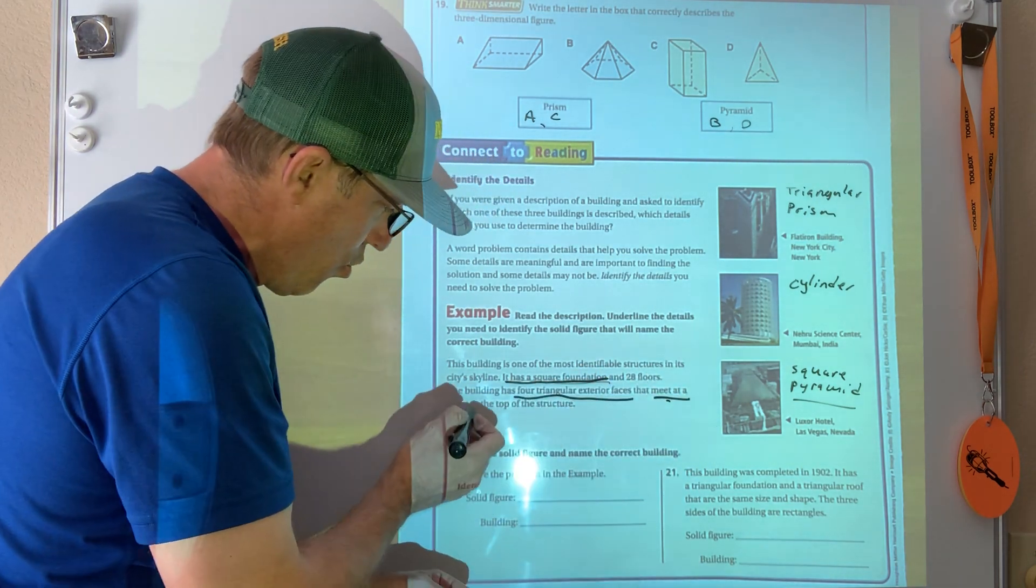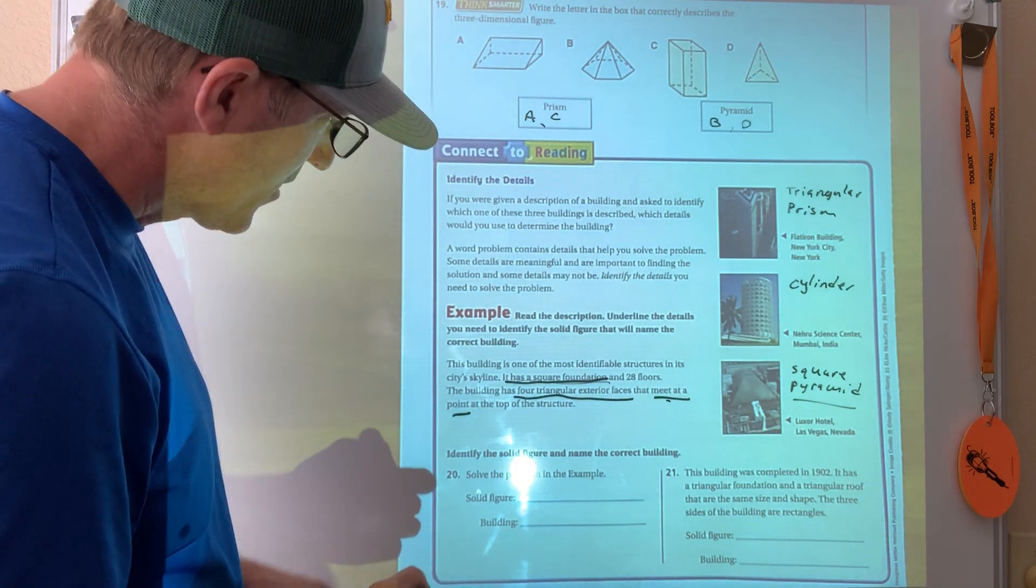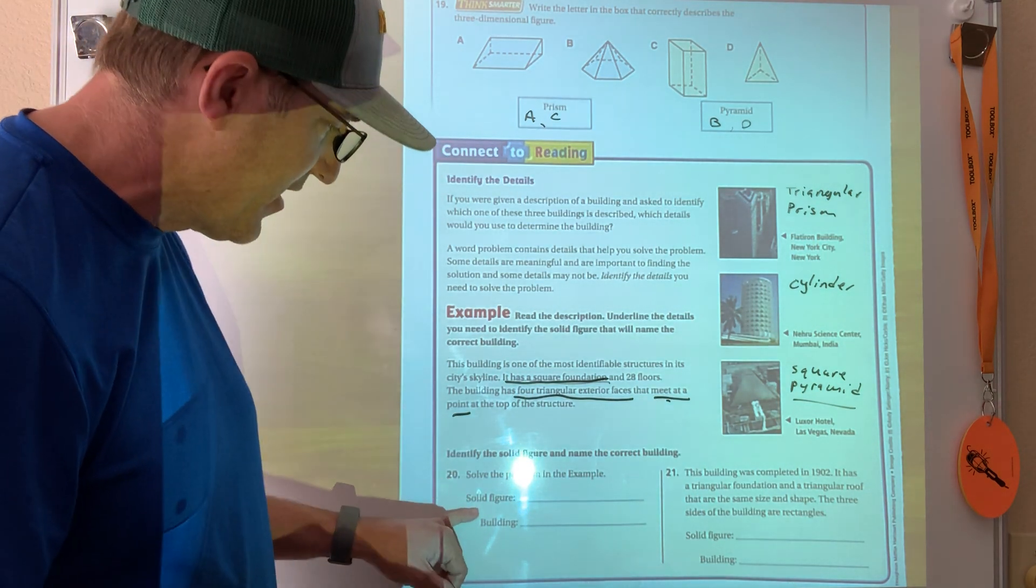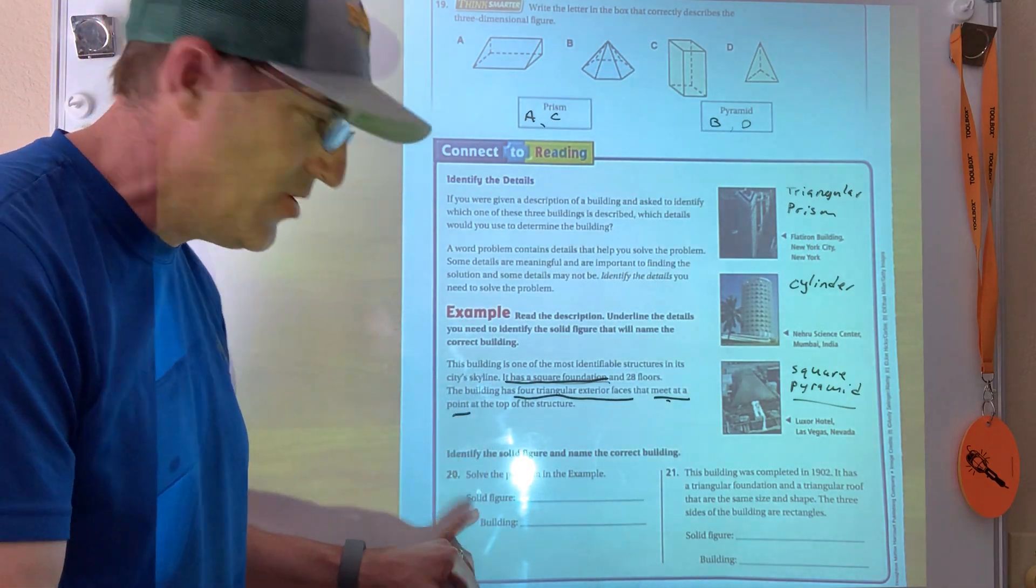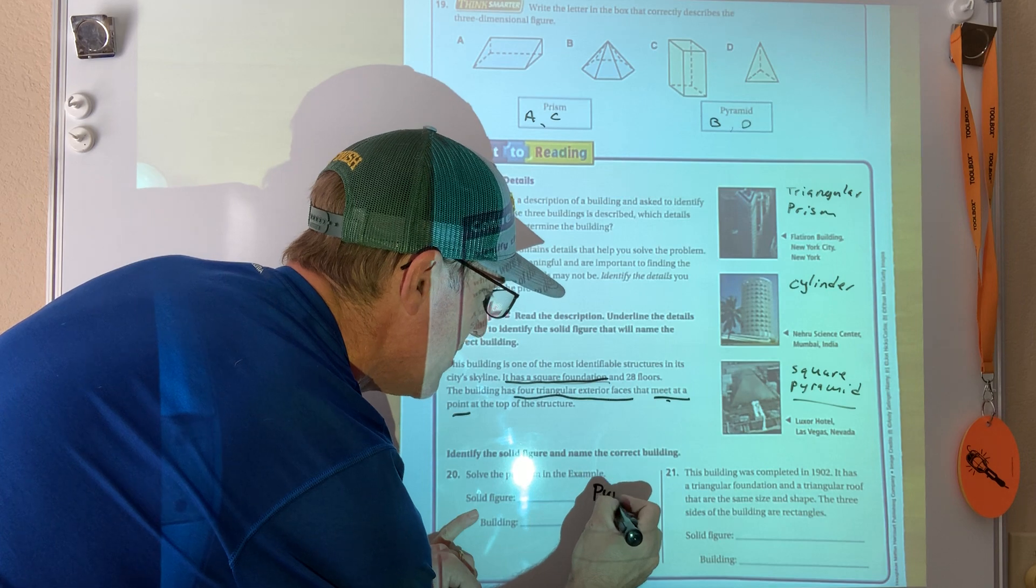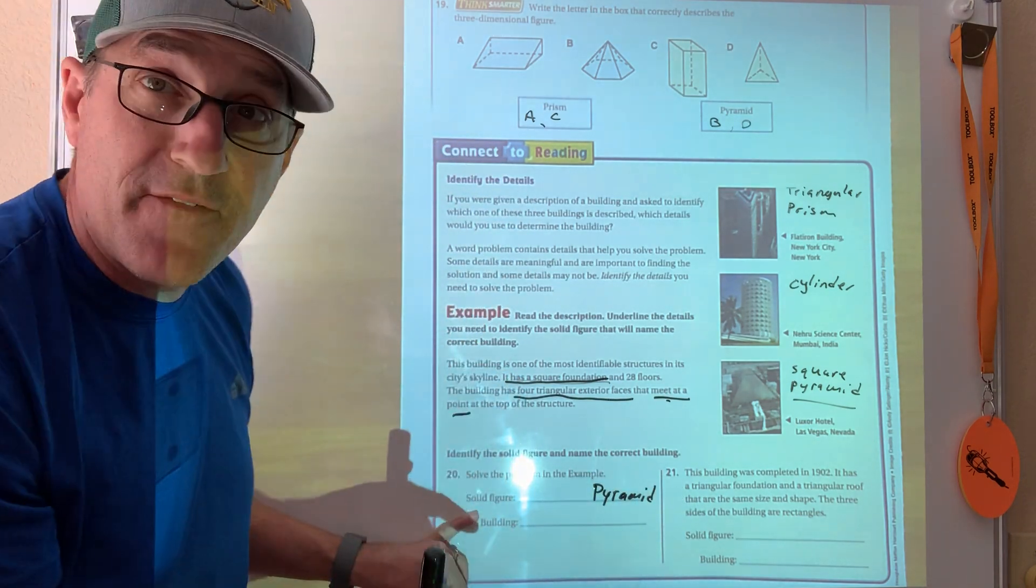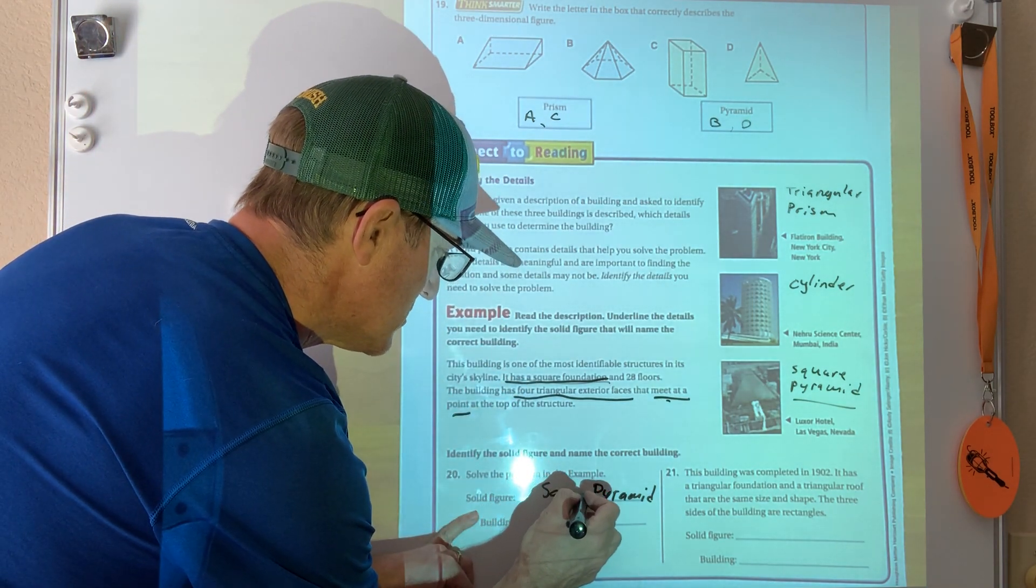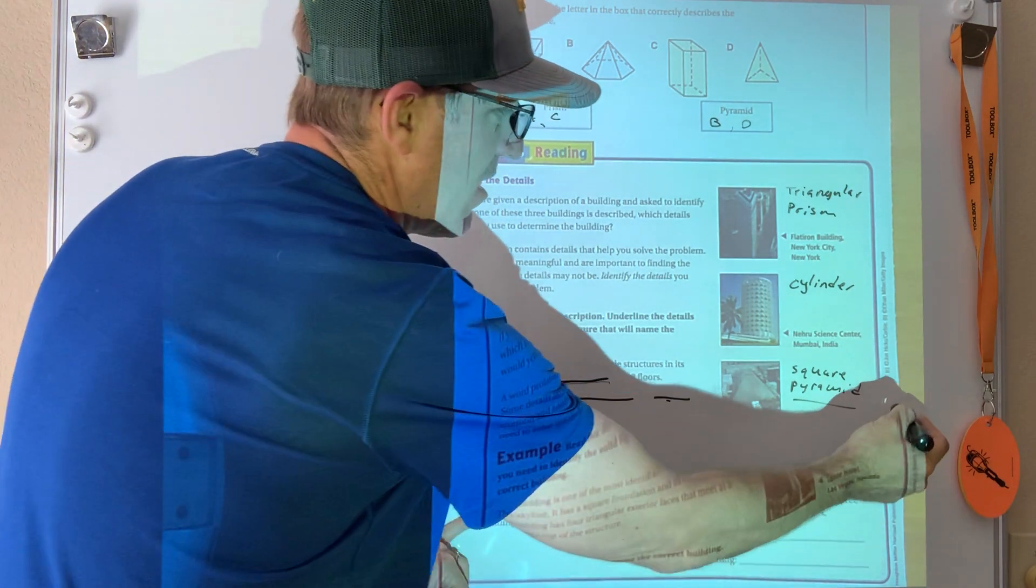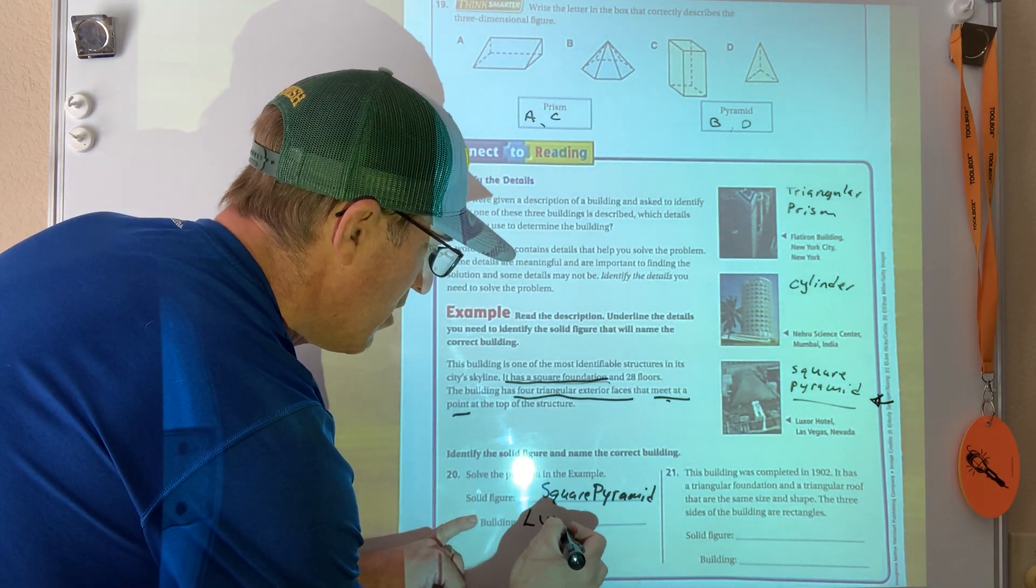Oh, it's got to be some kind of pyramid. If it's got triangular sides and it comes to a point, I know that it's a pyramid. I'm going to write pyramid. And it said the base was a square foundation. That's my base, so it's a square pyramid. And if I look over here, boom, we've already done that. That's the Luxor Hotel.